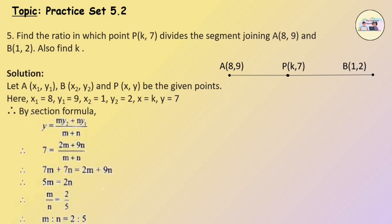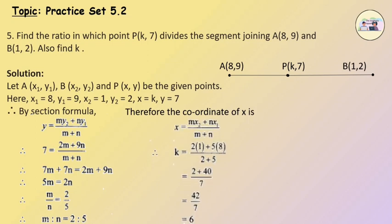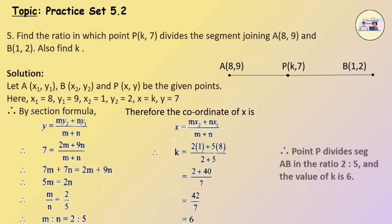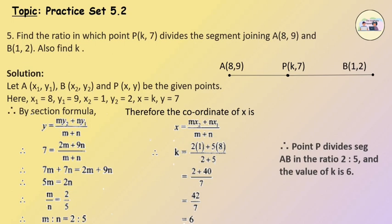By section formula: y = (my2 + ny1) / (m + n), so 7 = (2m + 9n) / (m + n). Therefore 7m + 7n = 2m + 9n, giving 5m = 2n, so m/n = 2/5, i.e., m : n = 2 : 5. Now, x = (mx2 + nx1) / (m + n), so k = (2 × 1 + 5 × 8) / (2 + 5) = (2 + 40) / 7 = 42/7 = 6. Therefore, point P divides segment AB in the ratio 2 : 5 and the value of k is 6.